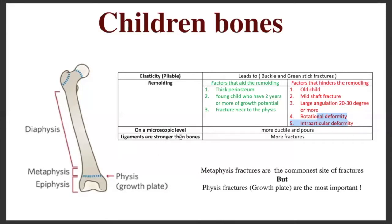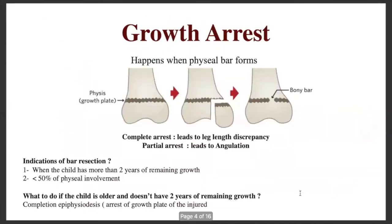The fourth property is that children's bones are weaker than the ligaments, which means there will be less sprains and more fractures. The most common site for fractures is the metaphysis, and the most important place to have a fracture in children is the physis or growth plate, because that can lead to growth limitation or growth arrest, which happens when a physeal bar forms.